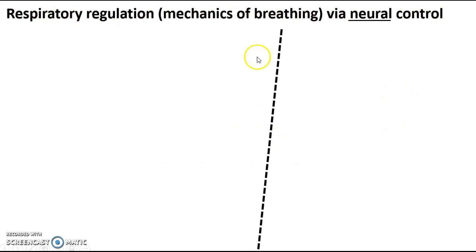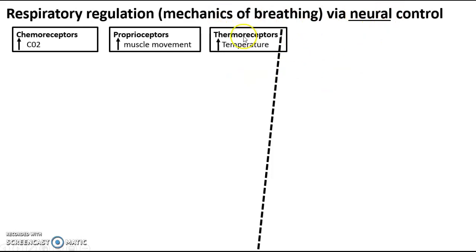How are we going to go about it? In order to regulate our breathing rate via the mechanics of breathing, this is how we do it via neural control. You're going to talk about some receptors — we have to add an additional receptor and we're taking one off for now. The first three receptors we're going to look at are chemoreceptors, proprioceptors, and thermoreceptors.